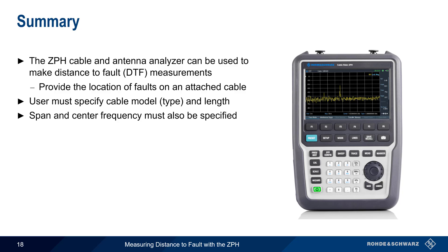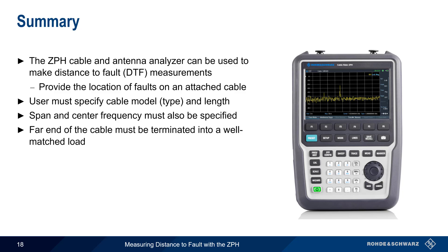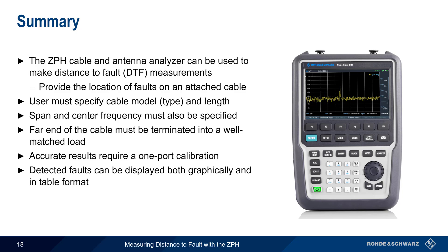When making distance-to-fault measurements, it's important to remember that the far end of the cable must be terminated into a well-matched load or resonant antenna. Accurate DTF measurements also require a valid one-port calibration. Measurement results are usually displayed in the form of a graph showing return loss as a function of distance, although faults can also be shown in tabular format. Finally, markers can be used on the trace results to obtain more precise numeric values.